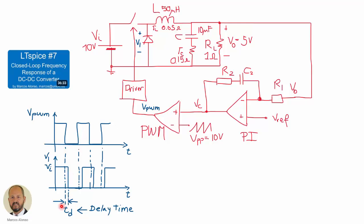T sub D is an important parameter — it is the delay between the PWM signal and the final voltage applied to our converter. This delay time can depend on many factors: the type of driver being used, whether it is an electronic driver with small delay or a pulse transformer with greater delay, and also the speed of the switch. In this video, we are going to see how this delay time affects the dynamic response of our converter.